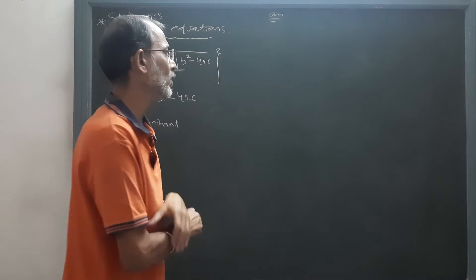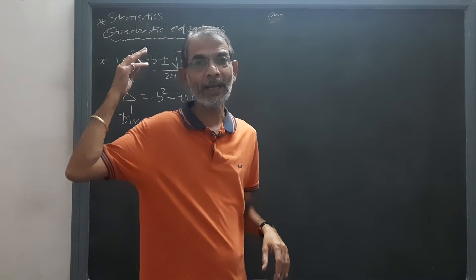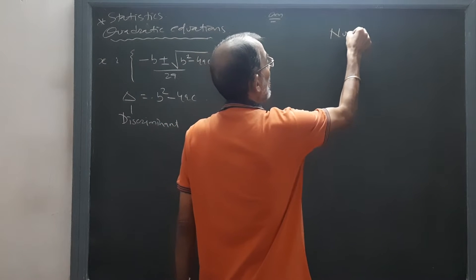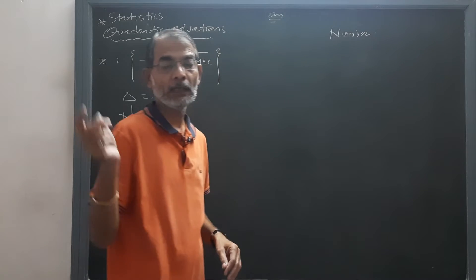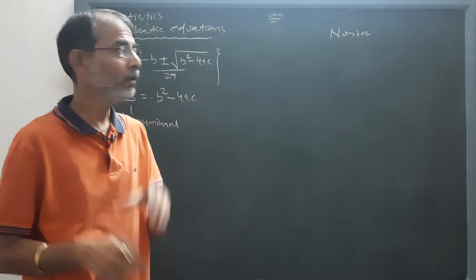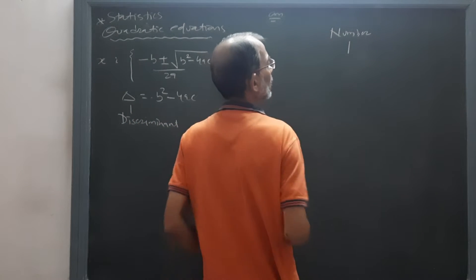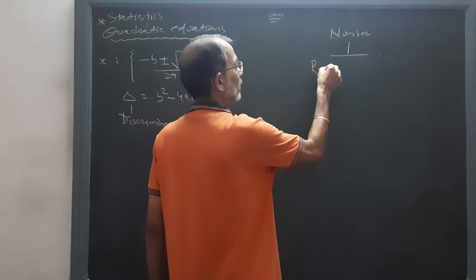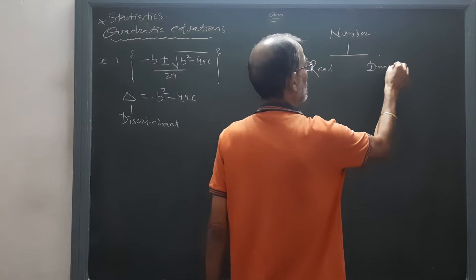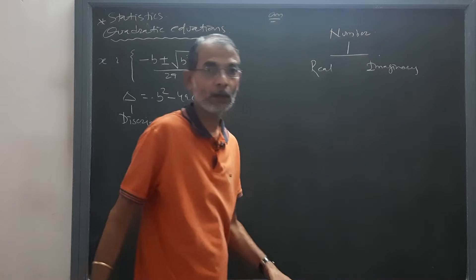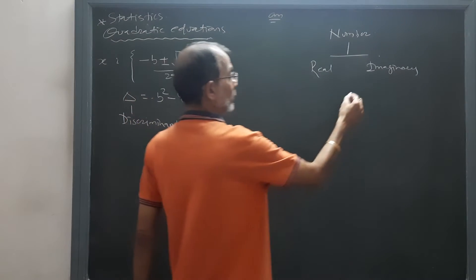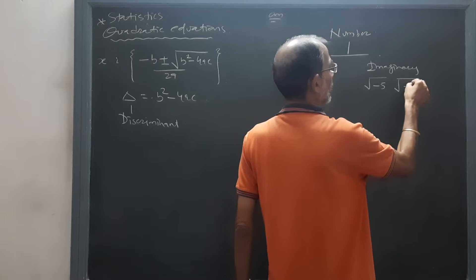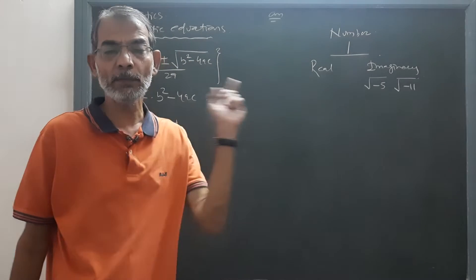This is called the discriminant. From the value of the discriminant, we can predict the nature of the roots. Now first of all, go back to 9th or 10th grade and see what the numbers are — numbers are real or imaginary.